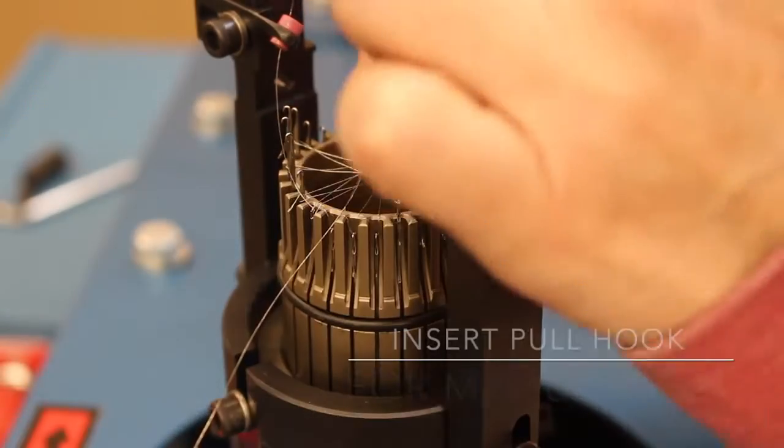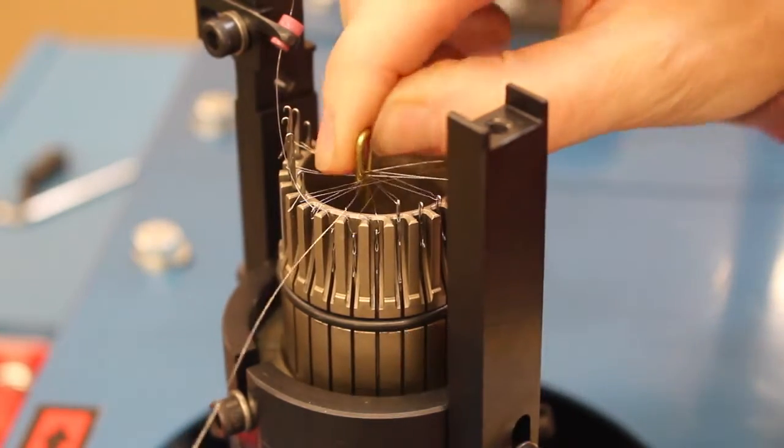Feed a pull hook down through the cylinder, capturing the wire in the center of the web.